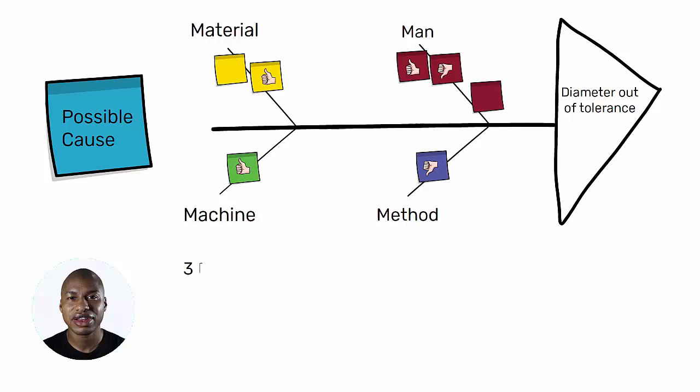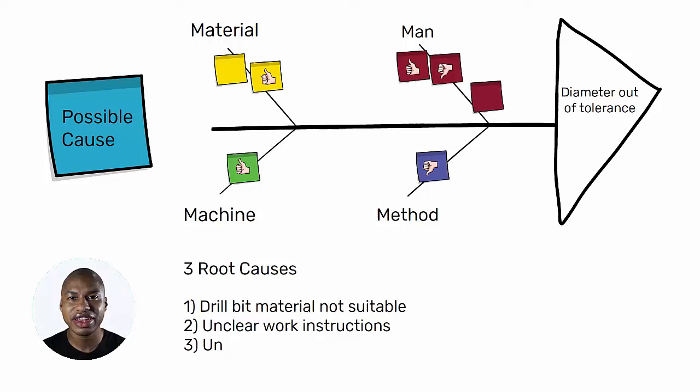In this example, we could imagine that the team decided to focus on these three root causes: one, drill bit material not suitable; two, unclear work instructions; three, unsuitable machinery.